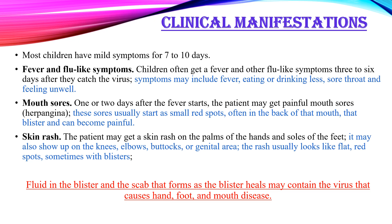The patient may get a skin rash on the palms of the hands and soles of the feet. It may also show up on the knees, elbows, buttocks and genital area. The rash usually looks like flat red spots, sometimes with blisters.